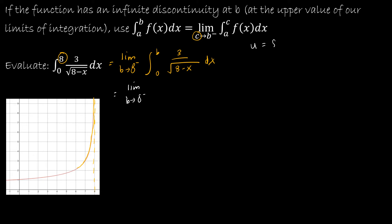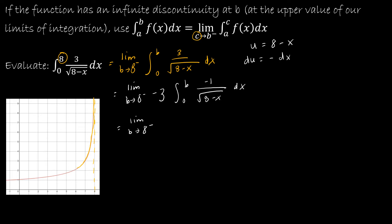The integration is not going to be difficult. If we let u equal 8 minus x, then du is going to equal negative dx. So in order for this to work, I'm going to need a negative on the inside, moving a negative 3 to the outside, and on the inside I've got negative 1 over (8 minus x). So now I can integrate: the limit as B approaches 8 from the left of negative 3 times — if I integrate (8 minus x) to the negative one-half, I get (8 minus x) to the positive one-half divided by one-half, evaluated from 0 to B.